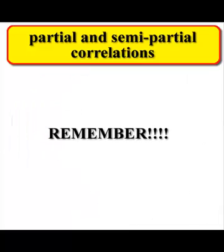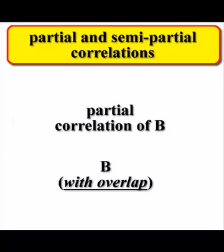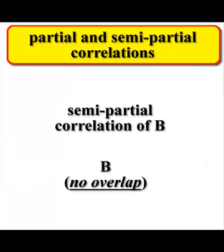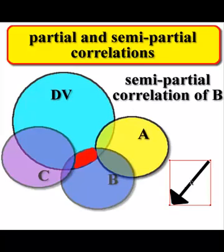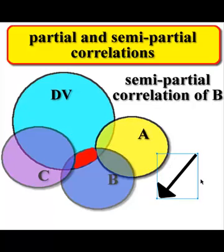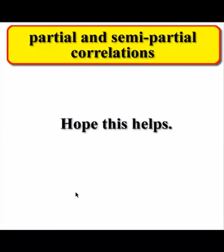But let's go over it real quick one more time. So remember this. A partial correlation of B takes into account all the overlap of B on the DV plus the overlap of A and C. A semi-partial correlation, there is no overlap. And it's just this little chunk here. So that's the difference between a partial correlation and a semi-partial correlation. And I really hope that helps. Thank you very much. Bye.